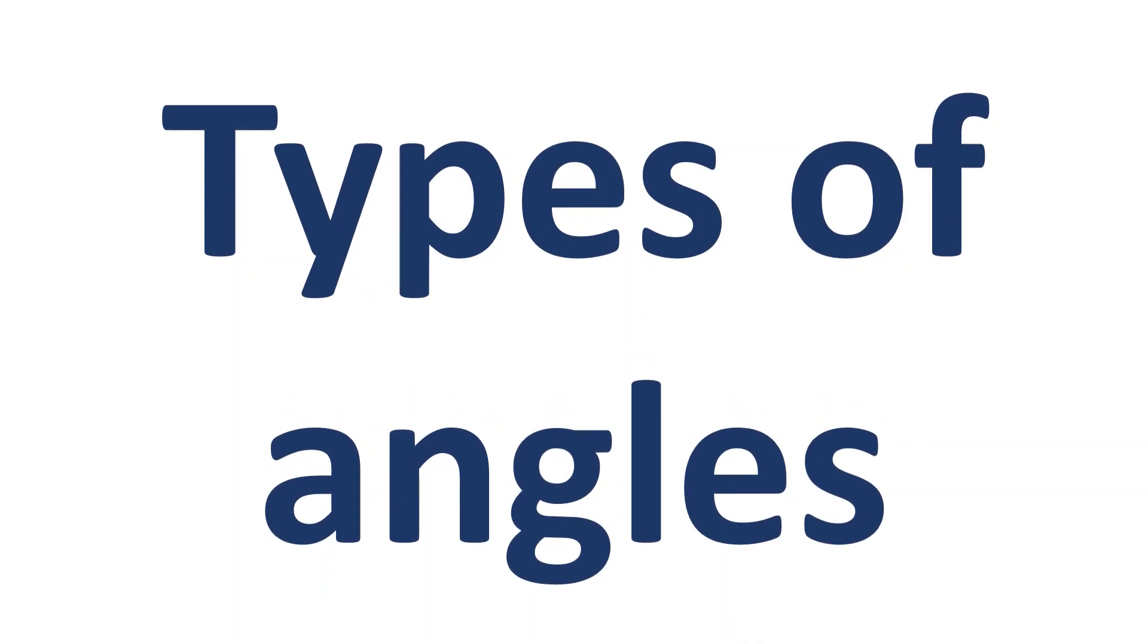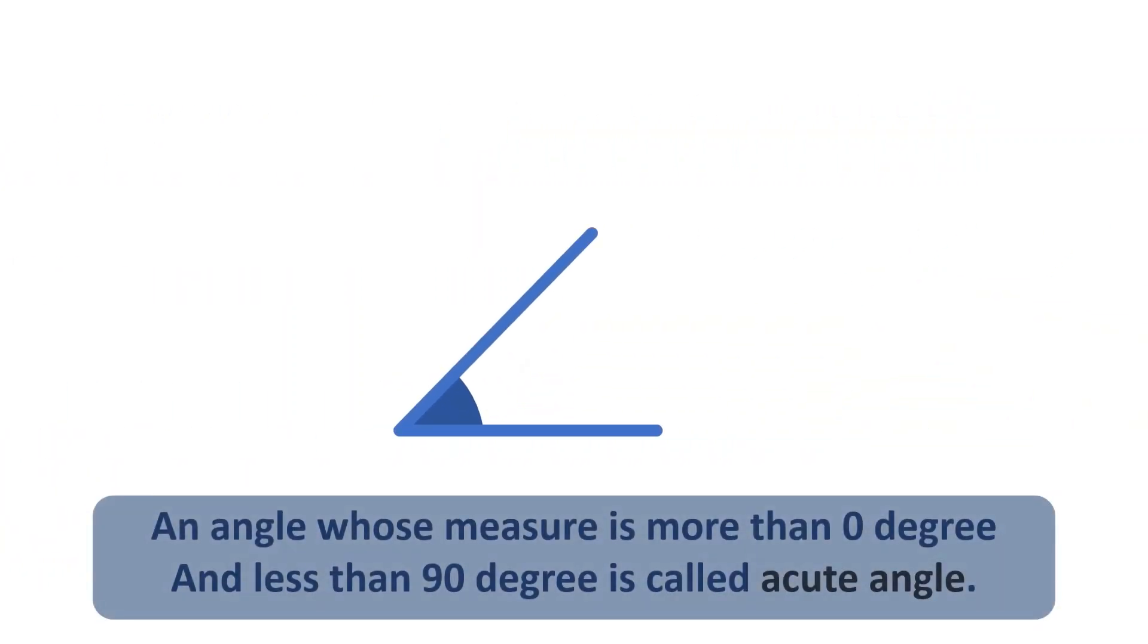Types of Angles. An angle whose measure is more than 0 degree and less than 90 degree is called Acute Angle.